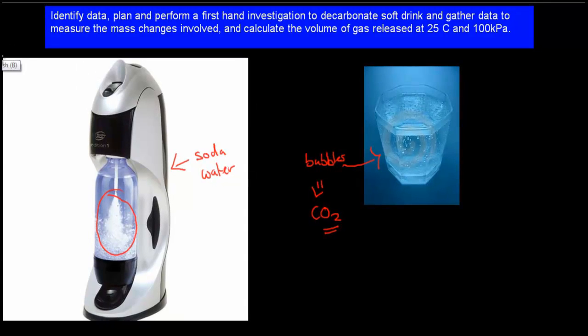The reason why I mention all this is because the actual experiment that you'll be doing or will have done already says identify data, plan and perform a first investigation to decarbonate soft drinks, and gather data to measure the mass changes involved, and calculate the volume of gas released at 25 degrees Celsius and 100 kilopascals.